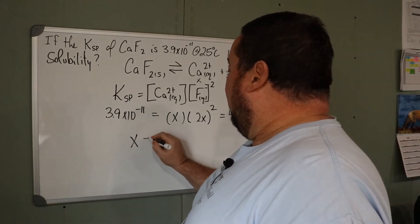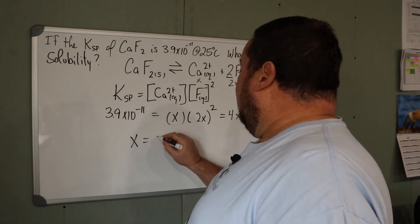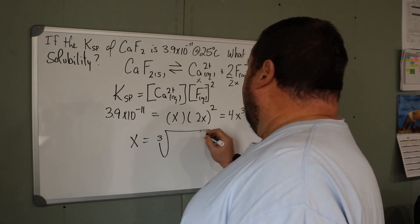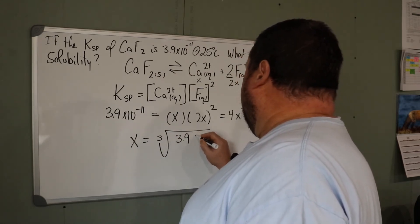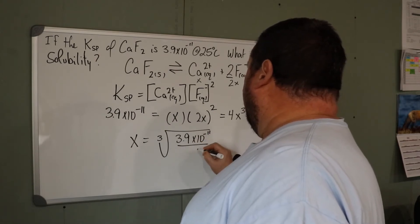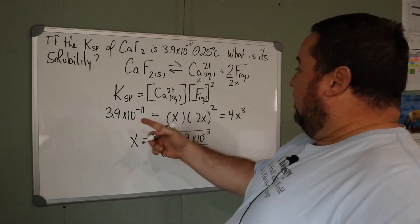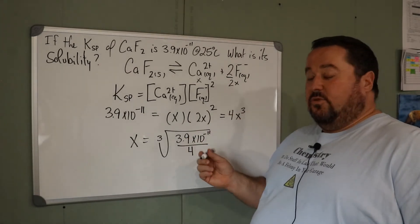So solving this for X, X will be the cubed root of 3.9 times 10 to the -11 over 4. So I divided each side by 4, then took the cubed root of each side.